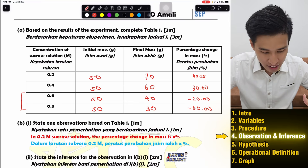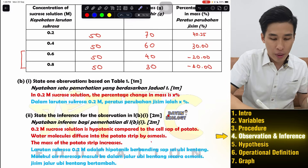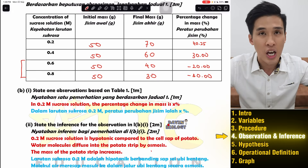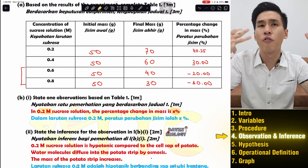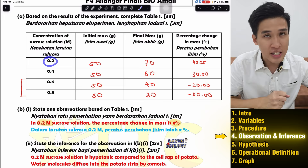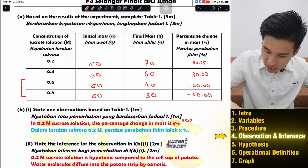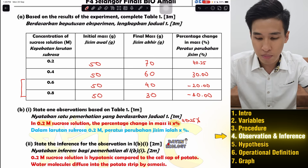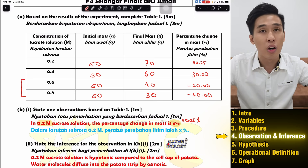Observation and inference are always answered together. For observation, no biological knowledge is needed — just write what you see. Always include the values of your MV and RV, using the highest and lowest values. For example: at 0.2 M, the percentage change in mass is 40.25%. You must write the actual values — do not write 'highest' or 'lowest', and do not explain. Just write what you observe.